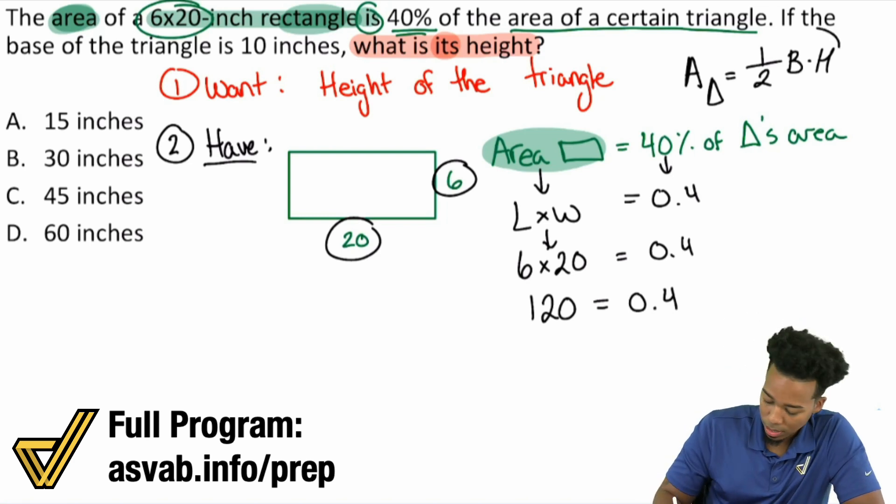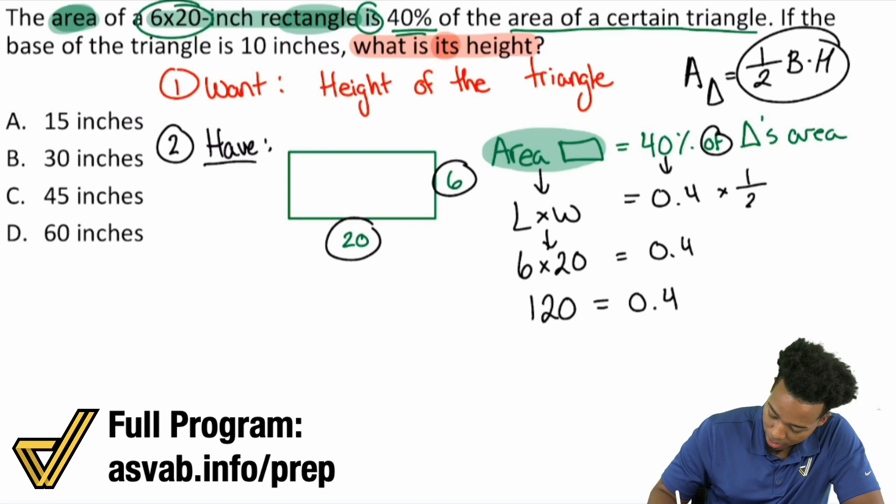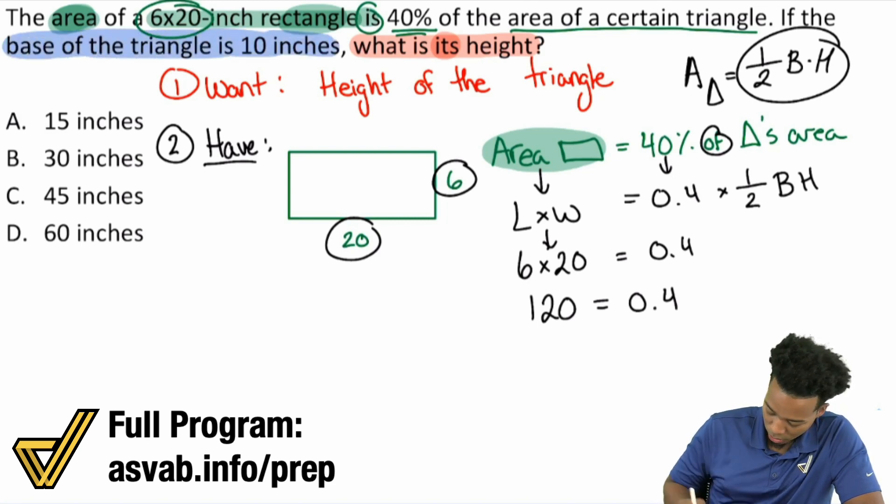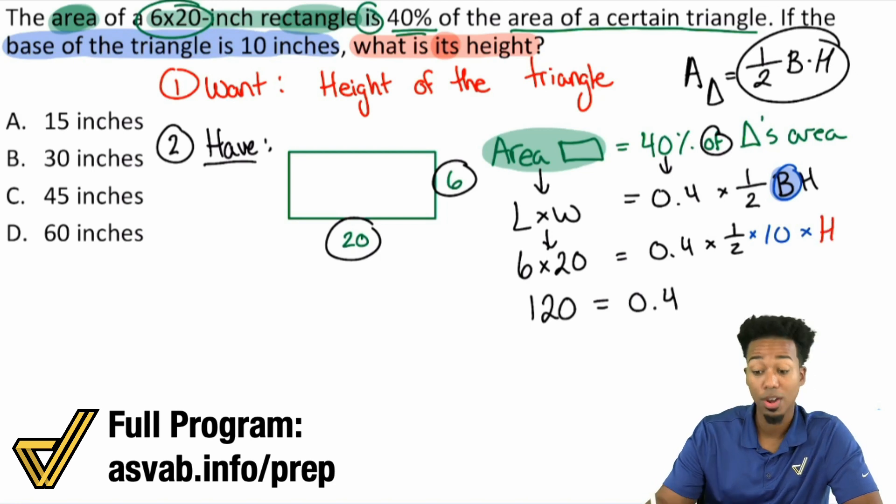We have 120 for the area of the rectangle. We know it equals 40% of the area of the triangle. So 40% written in terms of an equation, we need to turn that into a decimal 0.4. The area of a triangle is one half of its base times its height. So we have 0.4 of, means multiply, times one half base times height. We know the base is 10 inches, so we can insert that. We have 0.4 times one half times 10 times the height. The height is what we're looking for.